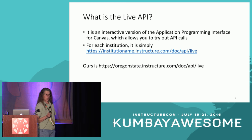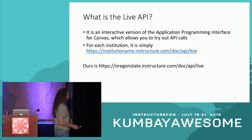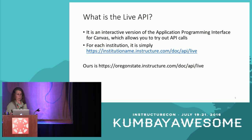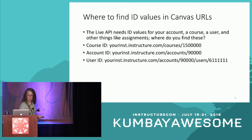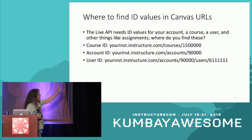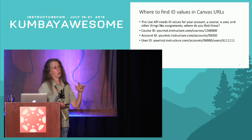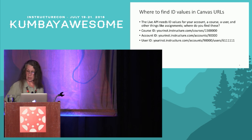You also have a test instance of this, so if you want to play with your test instance instead, you just put 'test' in there — oregonstate.test.instructure.com/api/v1/live. Everybody has it. One limitation is you have to use the internal IDs to get data out of the live API. For example, you need the course ID that shows up in the URL when you go to a course — you can't use the SIS course name. You also need your account ID, which is in the URL every time you go into Canvas, and the internal Canvas user ID generated when a new user is created.